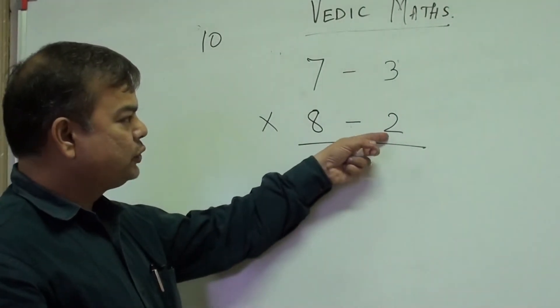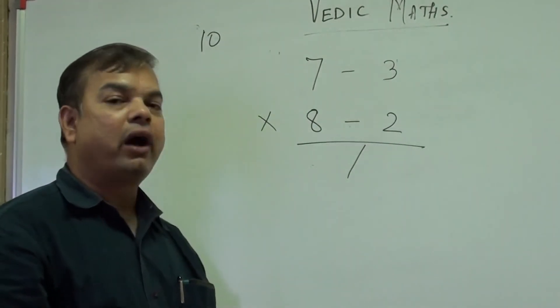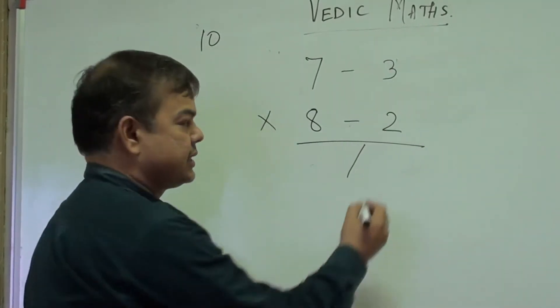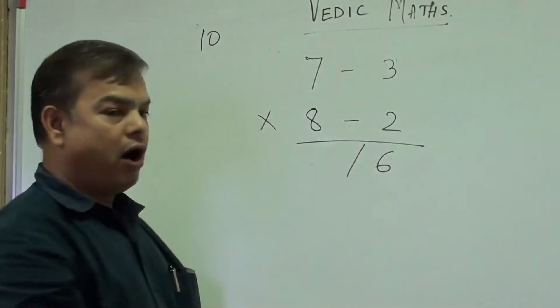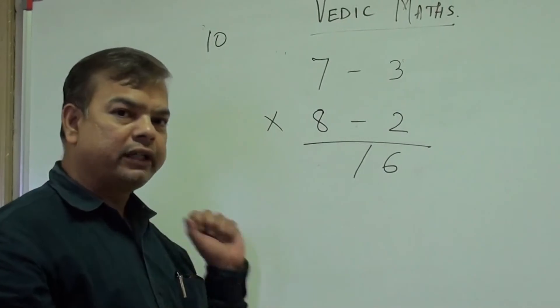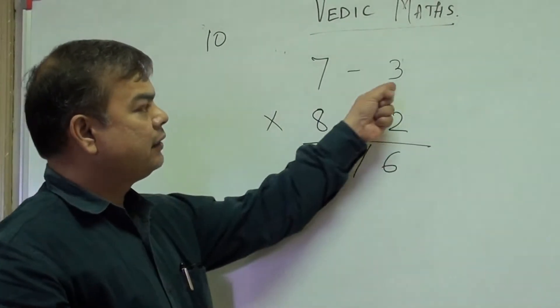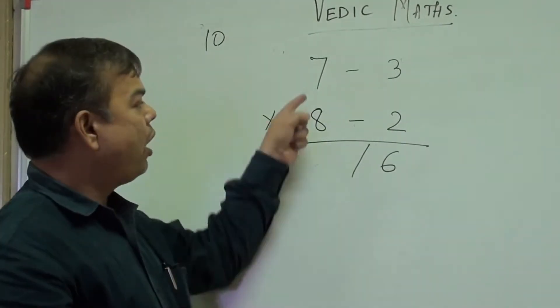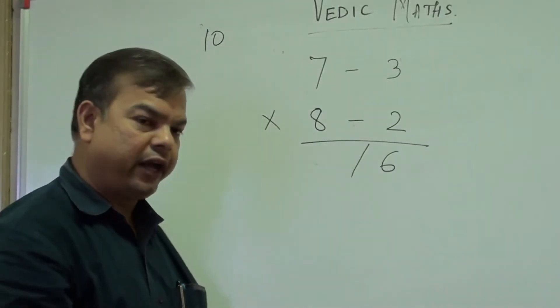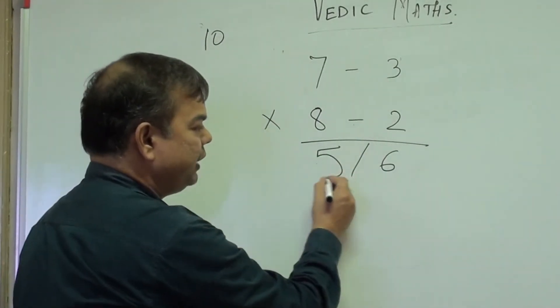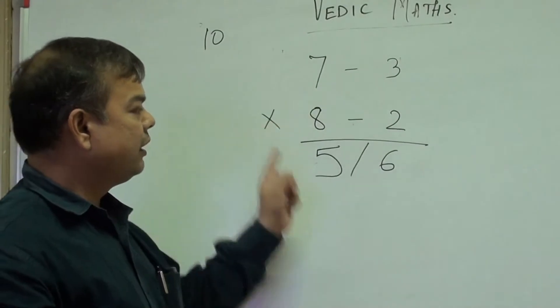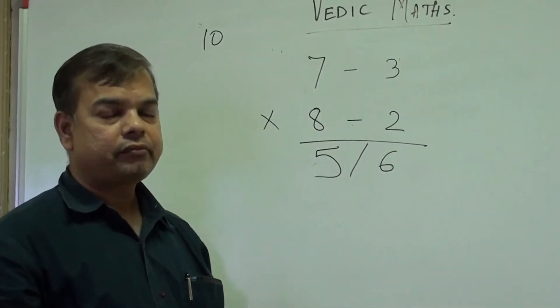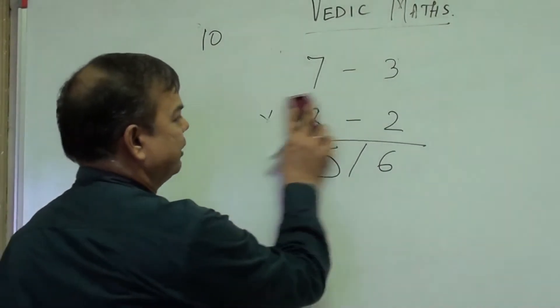So your answer is plus 6. Now you do cross addition, so 8 minus 3, that is 5, or 7 minus 2, again that is 5. So the answer is 56. So 8 sevens are 56. Now let us take another example.